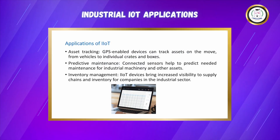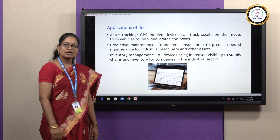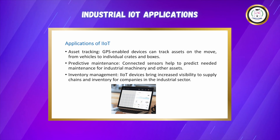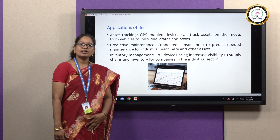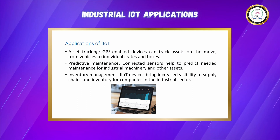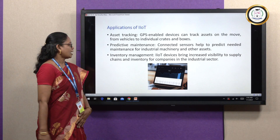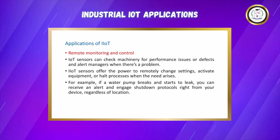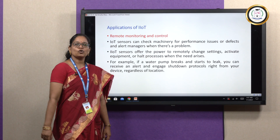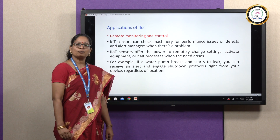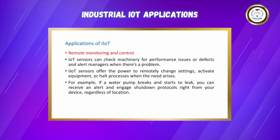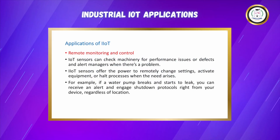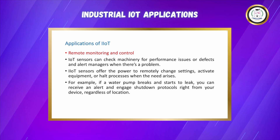The other applications are listed here. GPS-enabled devices can track vehicles, individual crates or boxes which are on the move. Connected sensors can help to predict the maintenance needed for machinery and other assets. Industrial IoT plays an important role in inventory management. These devices bring increased visibility to supply chain and inventory for companies in the industrial sector. Remote monitoring and control is another interesting application — IoT sensors can perform the role of assembly line inspector, checking machinery for performance issues or defects and alerting managers when there is a problem.